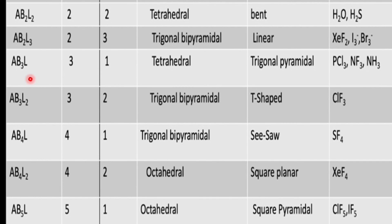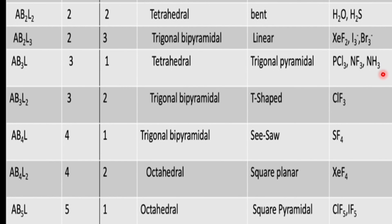Looking at the table: for molecular type AB3L, the number of bond pairs is 3 and the number of lone pairs is 1. The electron pair arrangement is tetrahedral due to the one lone pair electron, but the molecular geometry is trigonal pyramidal. NH3 is a classic example of this type.